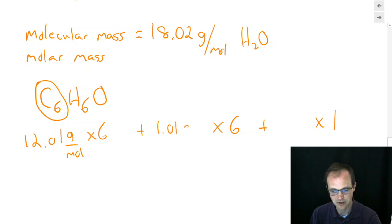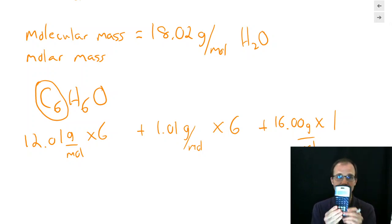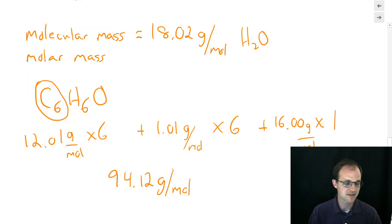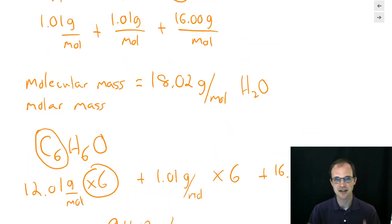It's 12.01 grams per mole. For hydrogen, it's 1.01 grams per mole. And for oxygen, it's 16.00 grams per mole. And again, I just got those straight from the periodic table. I didn't have to figure anything out. I didn't have to do any calculations on those. Now we just get on our handy-dandy calculator and add those up. 12.01 times 6 plus 1.01 times 6 plus 16.00. And I get 94.12 grams per mole as my molar mass of C6H6O. So any molecule you want, you just add up the parts. And normally, we just multiply by the total instead of adding each individual one.